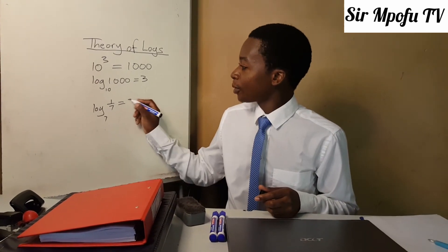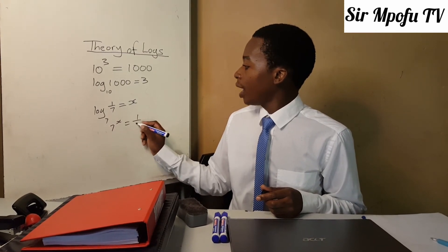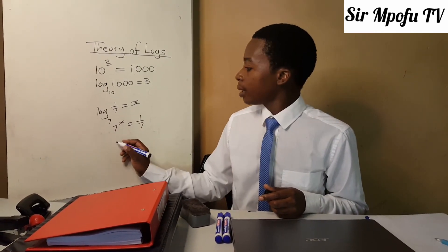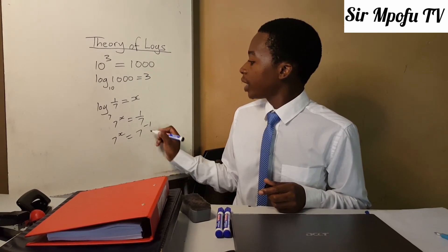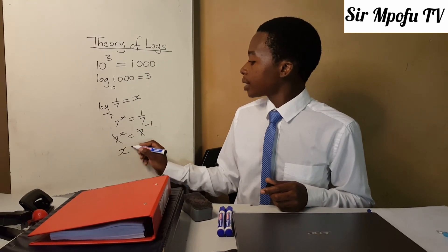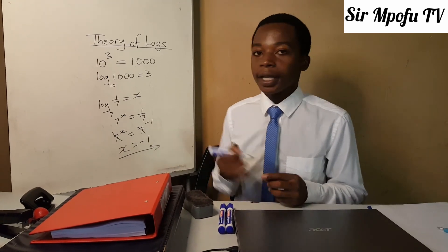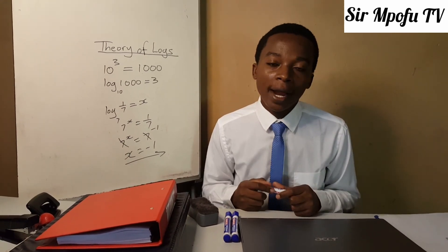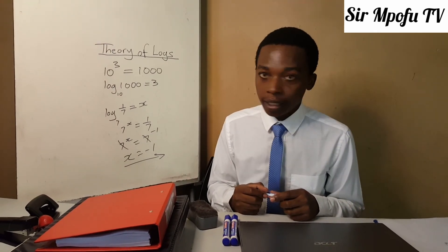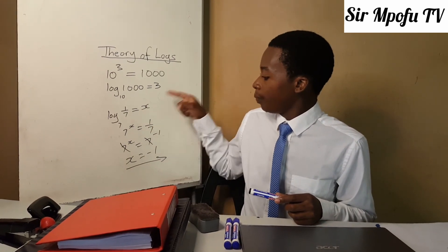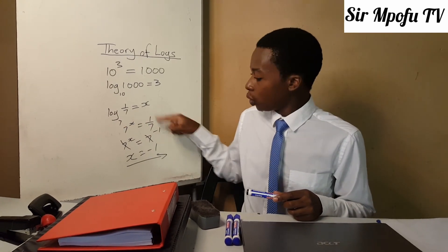Now let us do our last example. We are going to use x. So it means 7 to the power of x equals 1 over 7. You have to make the bases the same. 1 over 7 is the same as 7 to the power of negative 1, so 7 to the power of x equals 7 to the power of negative 1. Since the bases are the same, x equals negative 1. If you don't understand how this becomes 7 to the power of negative 1, watch some of my lessons on Sample of TV YouTube channel. Therefore log of 1 over 7 in base 7 equals negative 1.